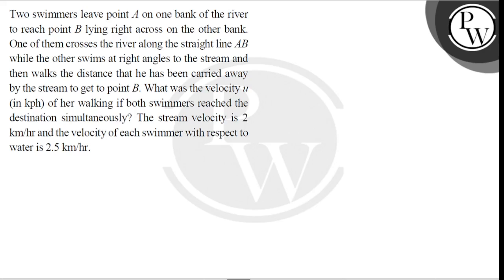Hello, let's hit the question. The question says: Two swimmers leave point A on one bank of the river to reach point B lying right across on the other bank. One of them crosses the river along the straight line AB, while the other swims at right angles to the stream and then walks the distance that he has been carried away by the stream to get to point B. What was the velocity u in kilometers per hour of her walking if both swimmers reach the destination simultaneously?